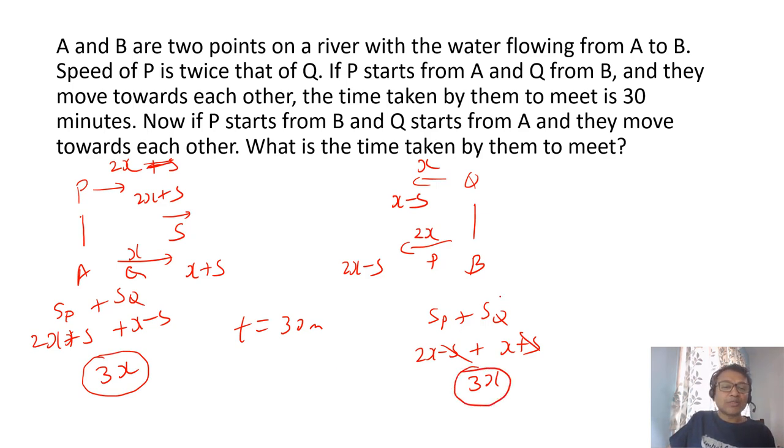So time taken should remain the same because distance is the same. So the answer should be 30 minutes. Because its relative speed is same. Even if P starts from A or P starts from B and vice versa, the relative speed of both will be 3x. And distance is the same. So time will be the same which will be 30 minutes. A lot of sums in time and distance can be understood better if you just draw it.